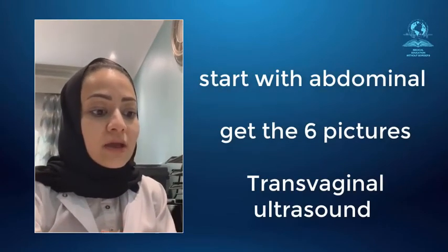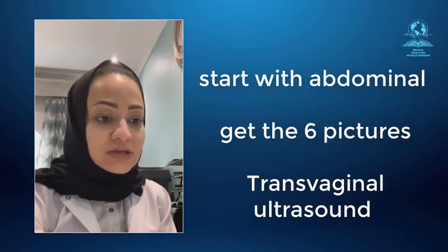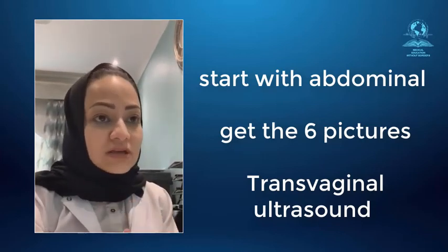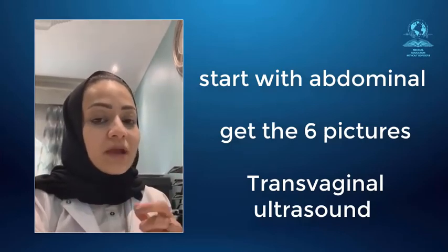To summarize: when doing a gynae ultrasound, start with the transabdominal approach and get all six images. Then proceed with the transvaginal ultrasound. When sweeping in the mid-sagittal view, sweep right and left completely until the whole picture disappears from the screen. When changing the probe direction to transverse, always rotate to the nine o'clock position.